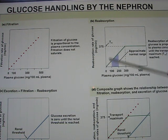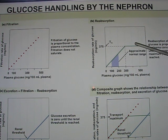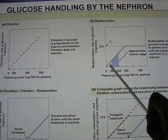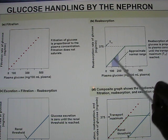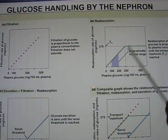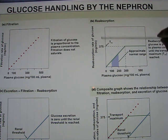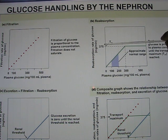Reabsorption depends on membrane proteins with binding sites that can be saturated. Below the renal threshold, more glucose means more can be taken back. Once it reaches the renal threshold, the transport maximum is reached and the rate plateaus. Any glucose provided beyond that cannot be transported back and is excreted in the urine.